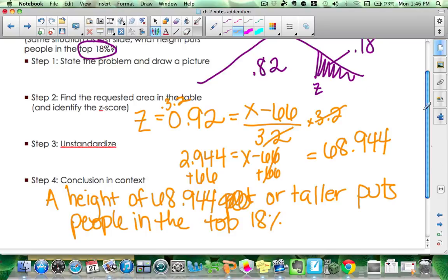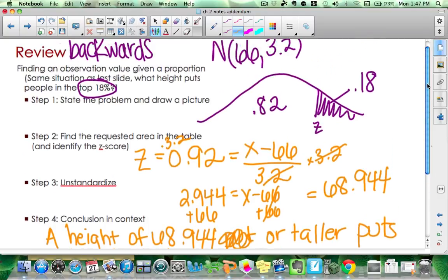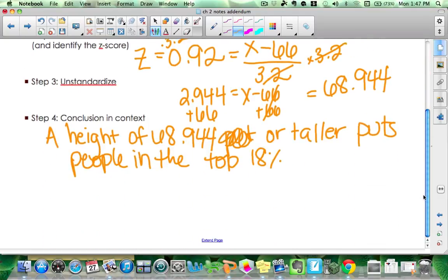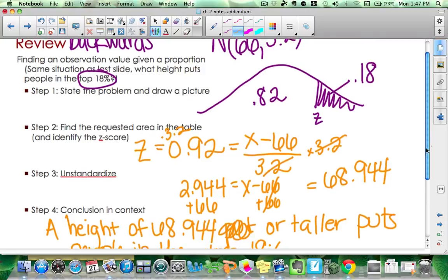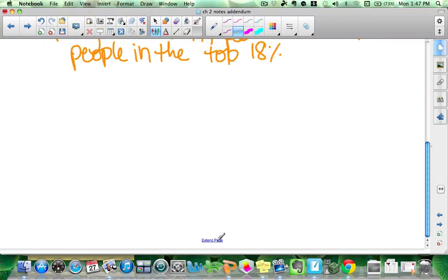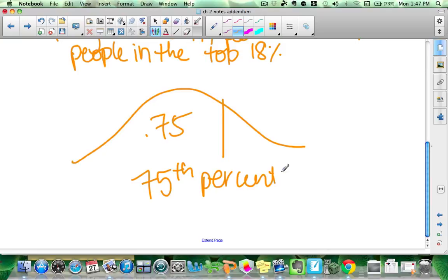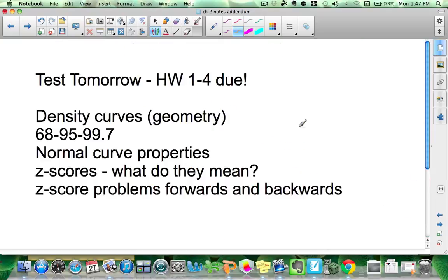Remember with these backward z-score problems, you may be asked to do this in terms of a percentile. Percentile just means area shaded to the left. So if I say something like what height puts people at the 75th percentile, that means the area to the left is 75%. That's what you're going to look up in the guts. This is a picture corresponding to the 75th percentile.